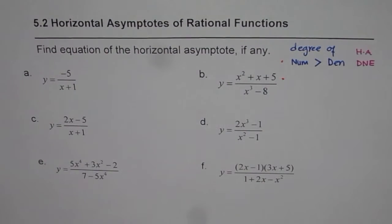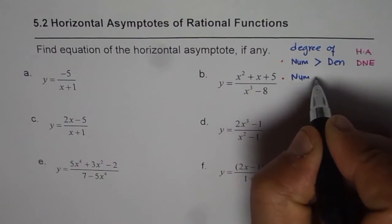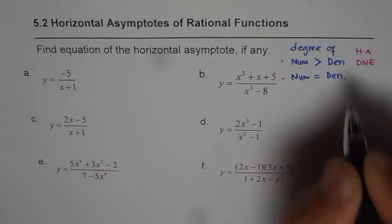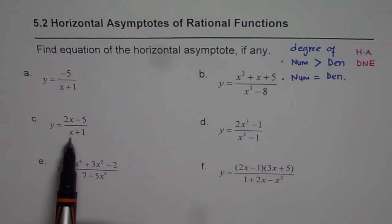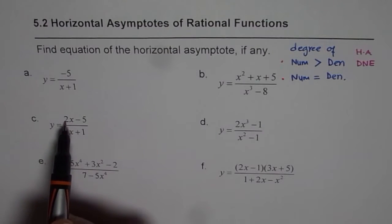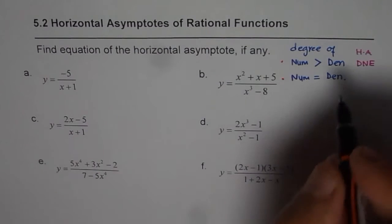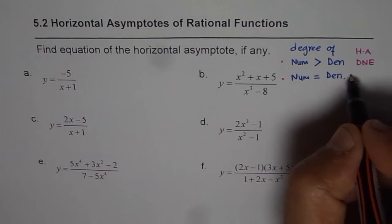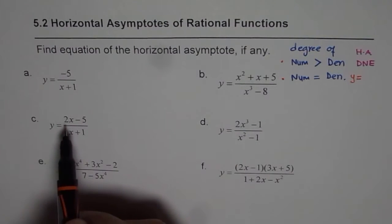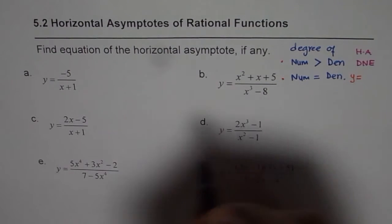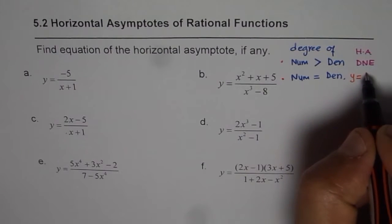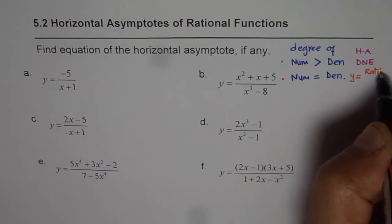Now let's take another case: when the degree of the numerator is equal to the degree of the denominator. For example, in Case C the degree of the numerator is 1 and the degree of the denominator is also 1. In that case we will have a horizontal asymptote, and its equation will be y equals the ratio of leading coefficients. So here the x terms cancel and we get 2 over 1, which is y equals 2.